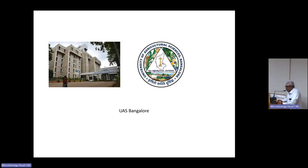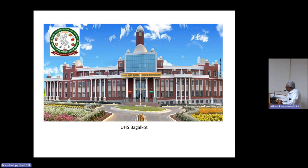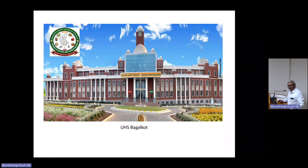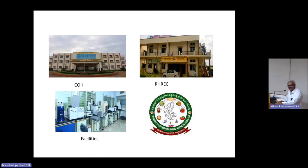The first university was established in 1963, and then the next was the University of Agriculture Sciences. I work for the College of Agriculture. We have a teaching campus and a research campus, and this is our centralized facility catering to the needs of student research as well as other research activities.